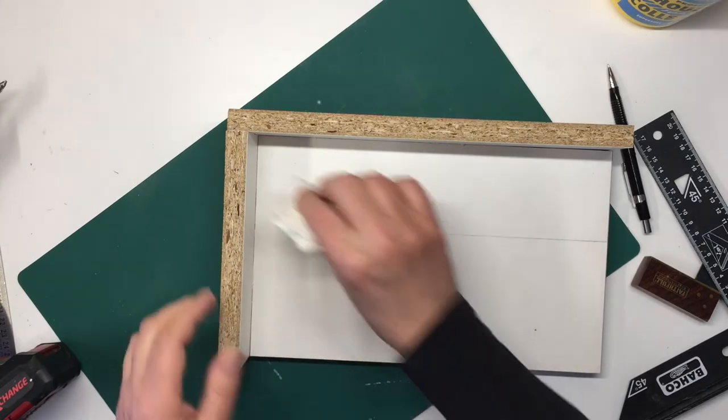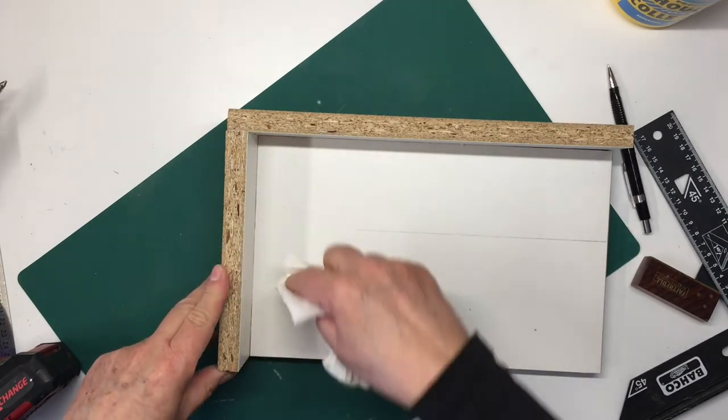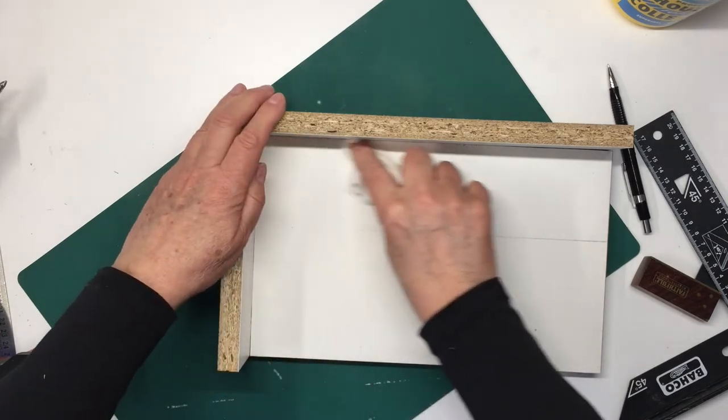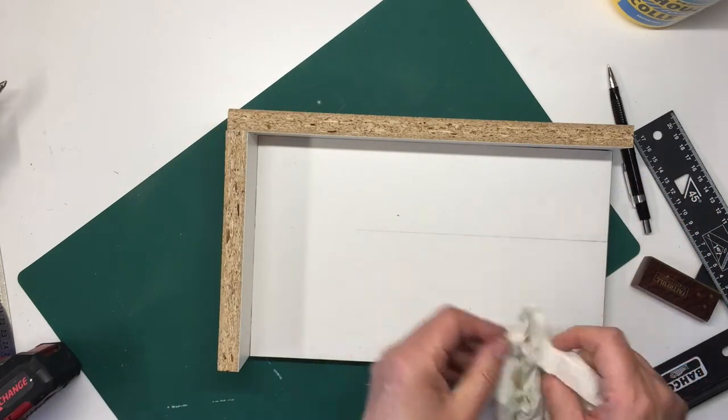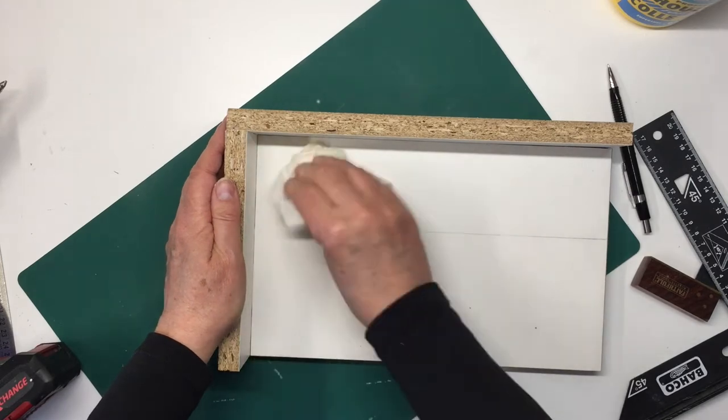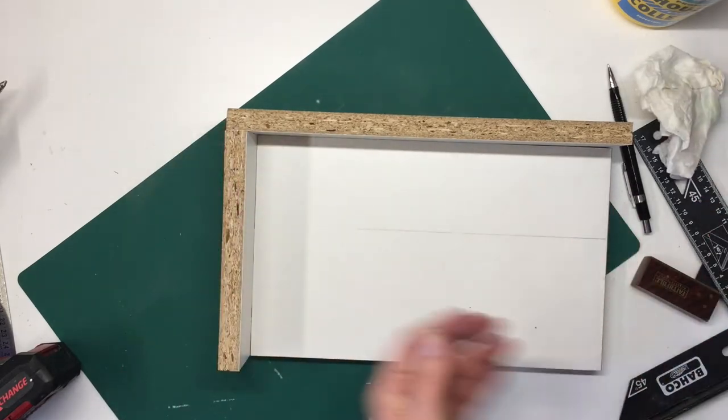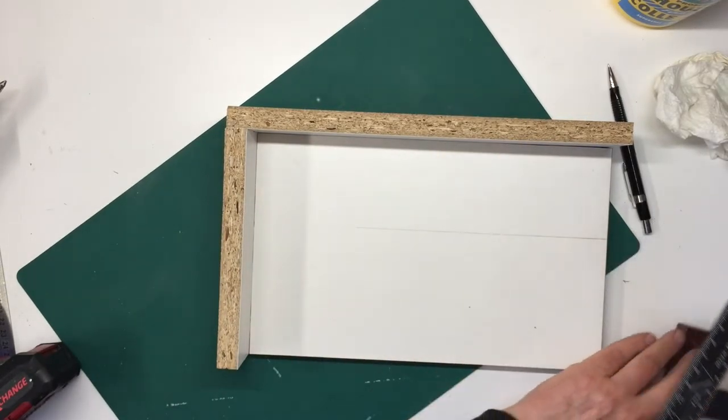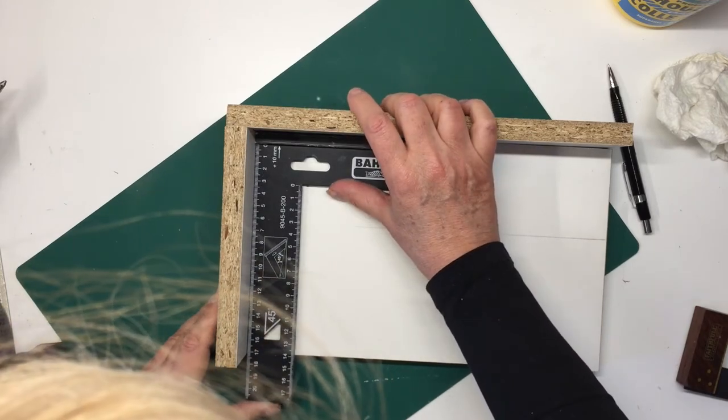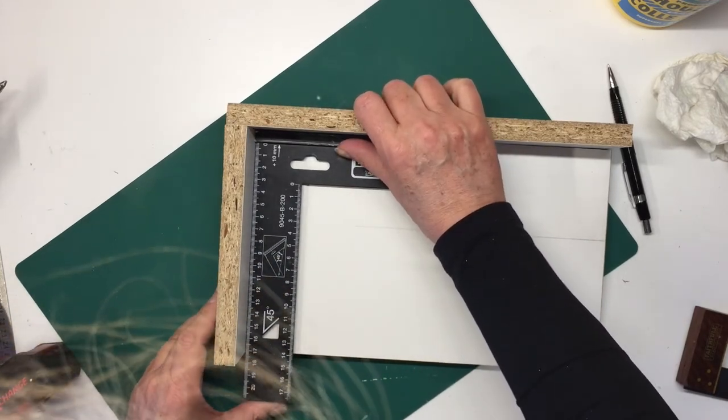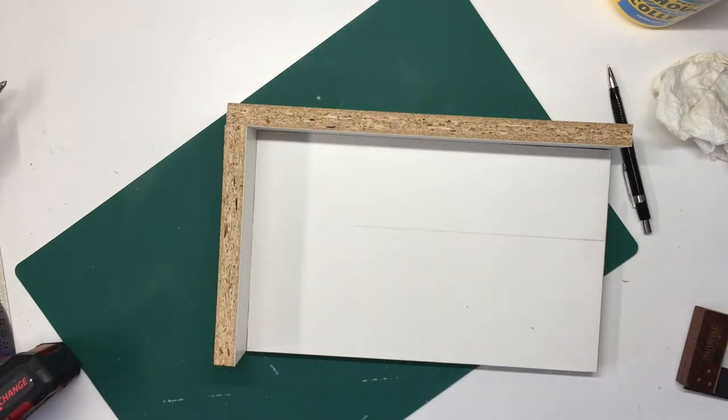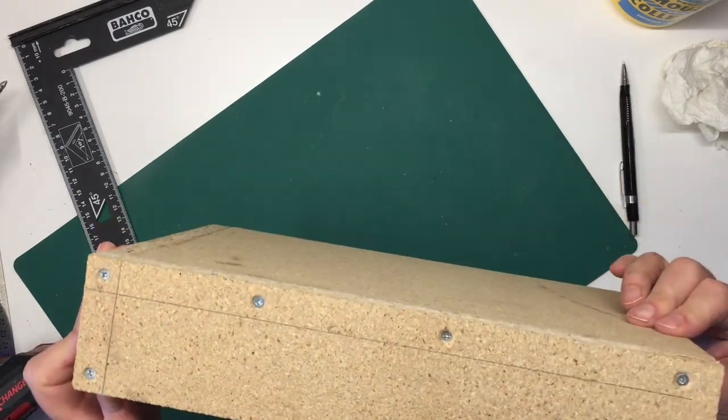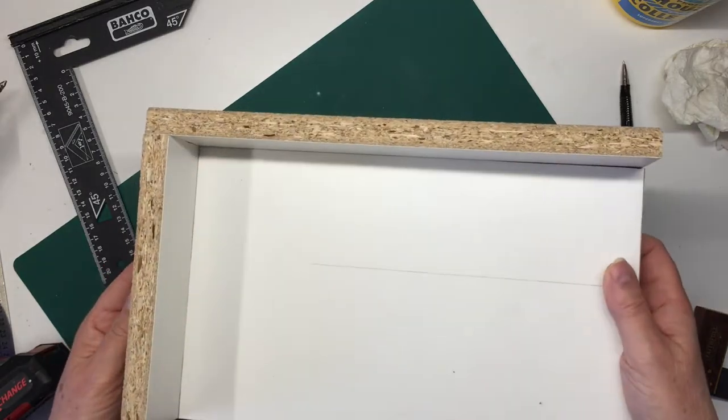Check if there's any glue coming out from the inside. I'm going to remove that. And we'll also check if it's actually square, because now I can still pull it apart. Oh, very nice. Perfect. I will leave that to dry, and then we'll have a gluing jig.